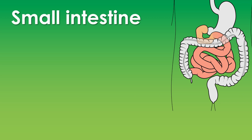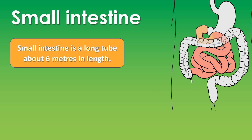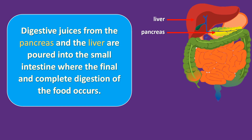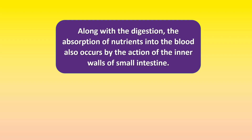The small intestine is a long tube about 6 meters in length. It has three parts: duodenum, jejunum, and ileum. The digestive juices from the pancreas and the liver are poured into the small intestine, where the final and complete digestion of the food occurs. Along with digestion, the absorption of nutrients into the blood also occurs by the action of the inner walls of the small intestine.